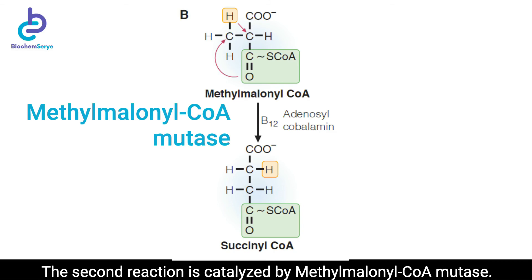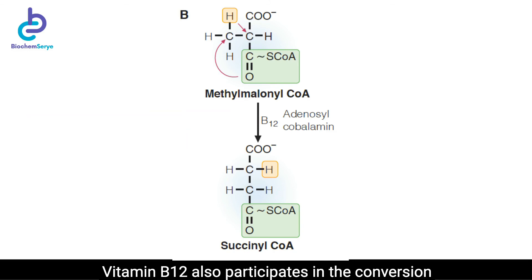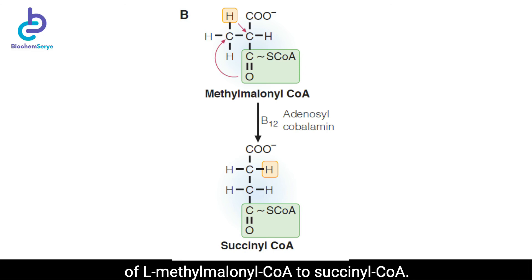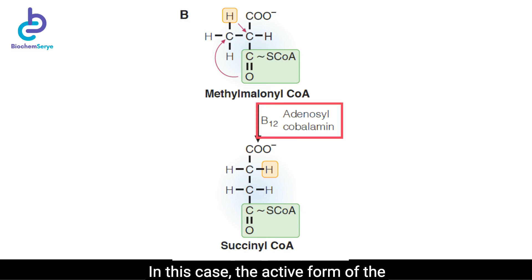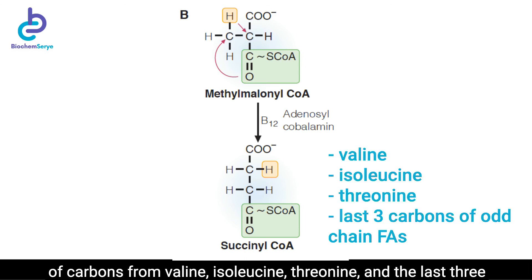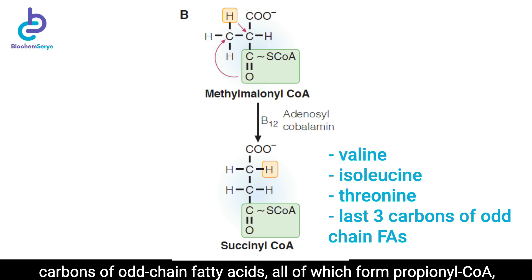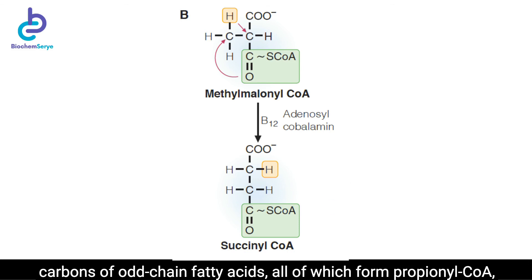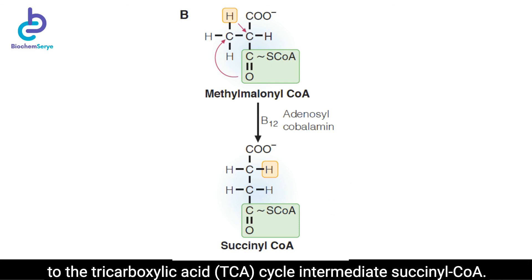The second reaction is catalyzed by methylmalonyl-CoA mutase. Vitamin B12 also participates in the conversion of L-methylmalonyl-CoA to succinyl-CoA. In this case, the active form of the coenzyme is 5'-deoxyadenosylcobalamin. This reaction is part of the metabolic route for the conversion of carbons from valine, isoleucine, threonine, and the last 3 carbons of odd-chain fatty acids — all of which form propionyl-CoA — to the TCA cycle intermediate succinyl-CoA.